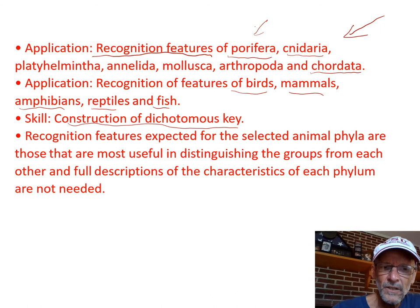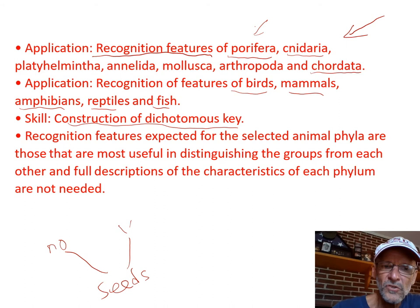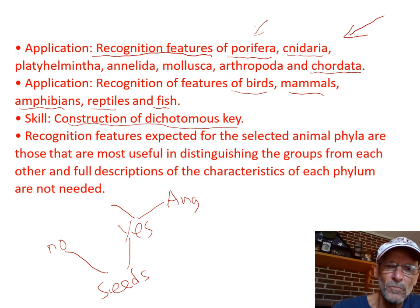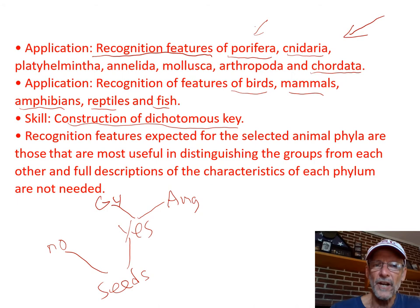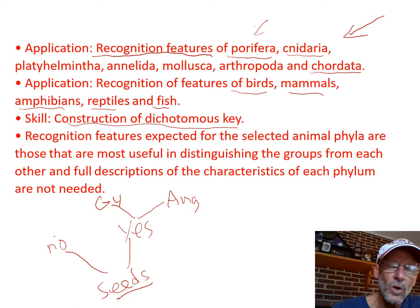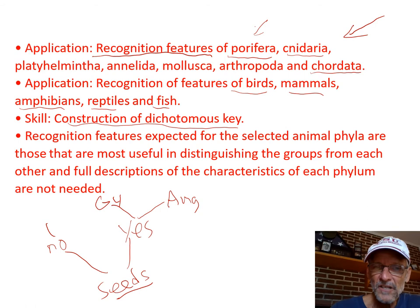A dichotomous key is where you ask a question. For example: does this organism make seeds? If no, we go this way on the classifying route. If yes, we go this way. Does it make flowers? If yes, we go to angiosperms. If no, we go to gymnosperms. That's a very small dichotomous key. If it doesn't make seeds, we're on the way to either mosses or ferns — bryophytes or pteridophytes. If it does make seeds, we ask another question: does it have flowers? Yes goes one way, no goes the other.